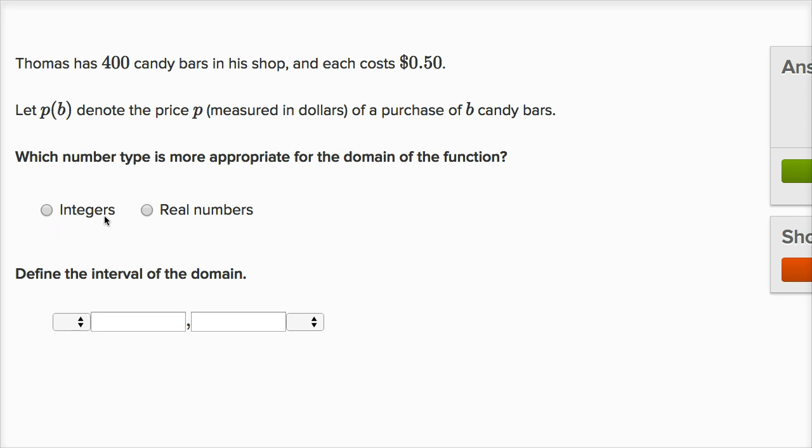So let's think about it. Is it integers or real numbers? I could buy B equals zero candy bars, one candy bar, two candy bars, all the way up to 400 candy bars. Could I have a fractional candy bar? Could B be 0.372 of a candy bar? Well, if this is a normal candy shop,